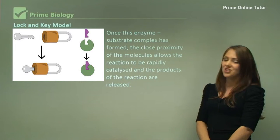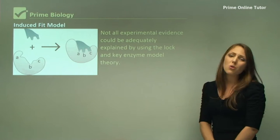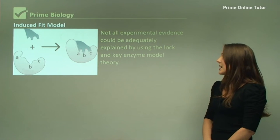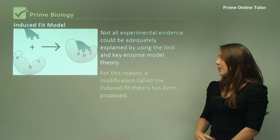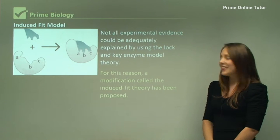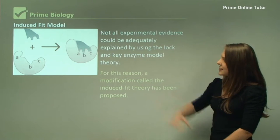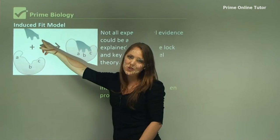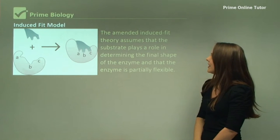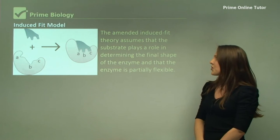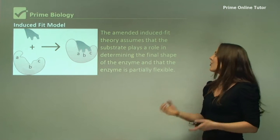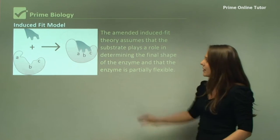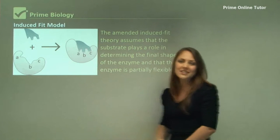Not all experimental evidence could be adequately explained with this model, so now there's a new theory. It's called the induced fit theory. And as you can see here, we have an enzyme. The active site is not complementary to the substrate. The amended induced fit theory assumes that the substrate plays a role in determining the final shape of the enzyme and that the enzyme is partially flexible. You can see here that the enzyme has shaped around the substrate.